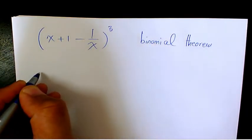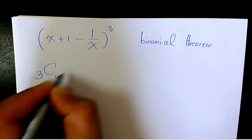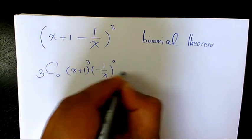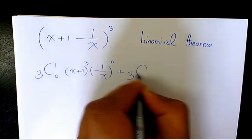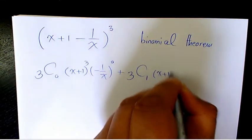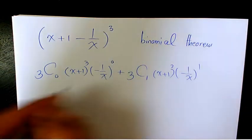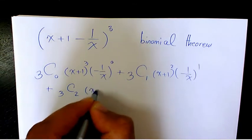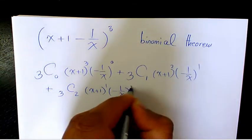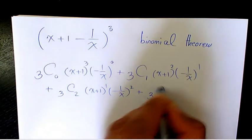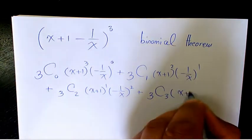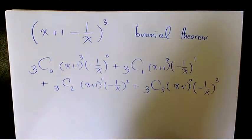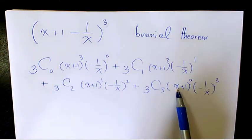When you expand it, it's going to be: 3C0·(x+1)³·(-1/x)⁰, plus 3C1·(x+1)²·(-1/x)¹, plus 3C2·(x+1)¹·(-1/x)², then 3C3·(x+1)⁰·(-1/x)³. As you can see, the index is 3, so we end up having four terms.